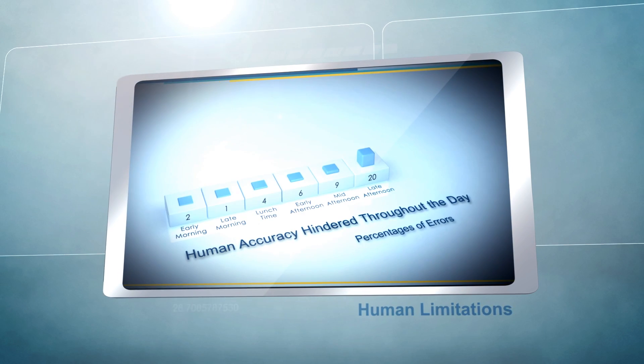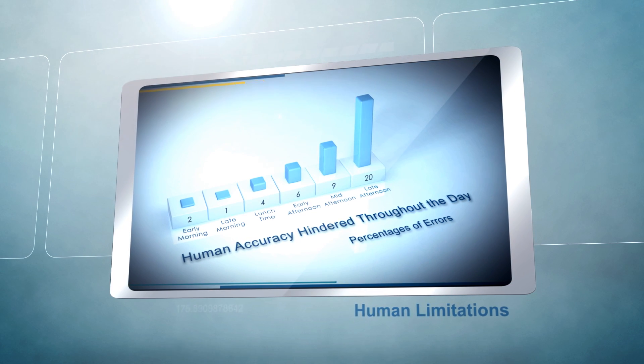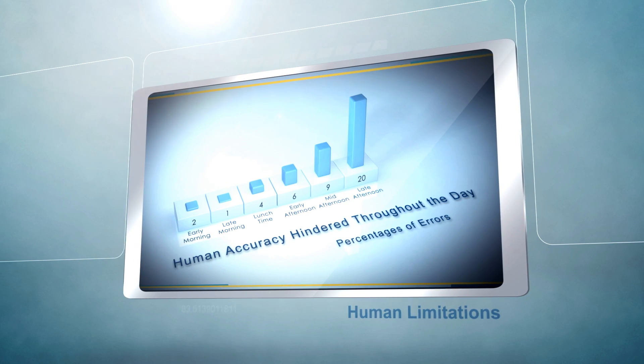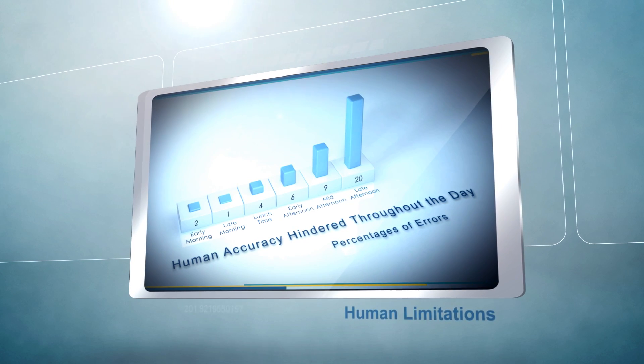For example, a signature verification operator who is required to review 200 to 300 signatures an hour will have diminished accuracy over time, making more mistakes at the end of the day than at the beginning.